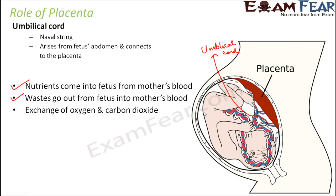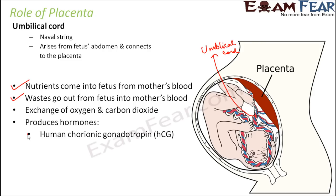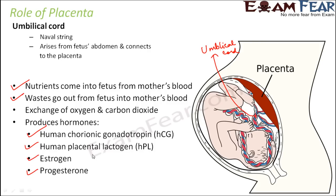Another function is the exchange of oxygen and carbon dioxide. The fetus needs oxygen, so oxygen comes in through the placenta; carbon dioxide goes out through the placenta. All things to be taken in or given out happen via placenta. The placenta also helps in the production of several hormones: human chorionic gonadotropin (HCG), human placental lactogen (HPL), estrogen, and progesterone. HCG and HPL are exclusively produced in a woman only during pregnancy; otherwise these hormones are not produced.